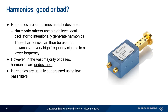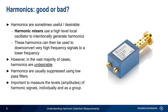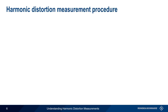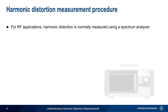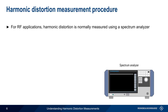Because harmonics are undesirable, it's important to measure the levels or amplitudes of both the individual harmonics as well as the sum of all harmonics. These types of measurements are called harmonic distortion measurements. In radio frequency applications, harmonic distortion is normally measured using a spectrum analyzer.